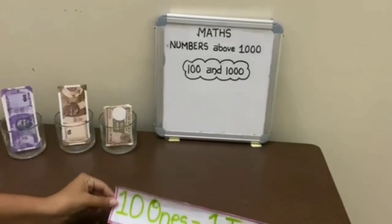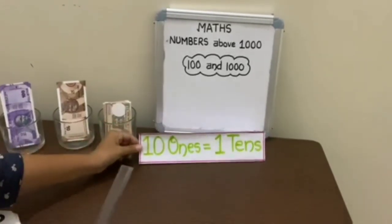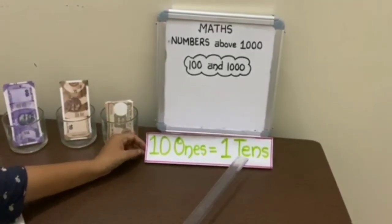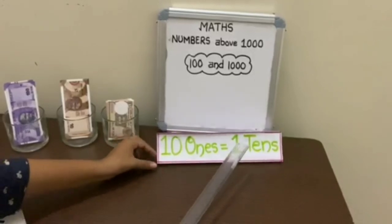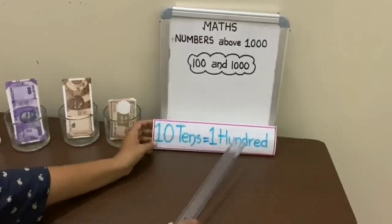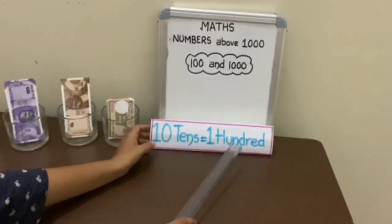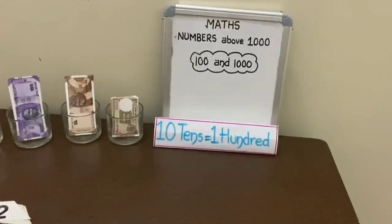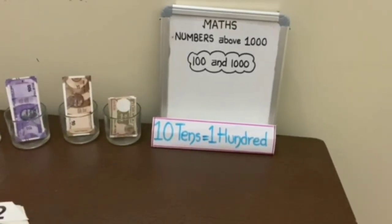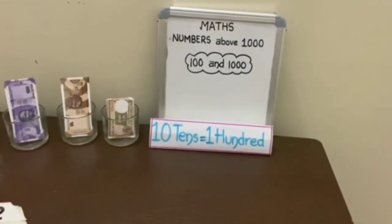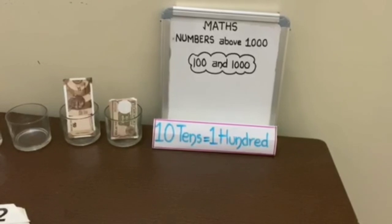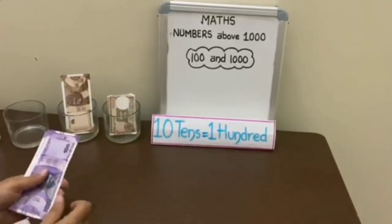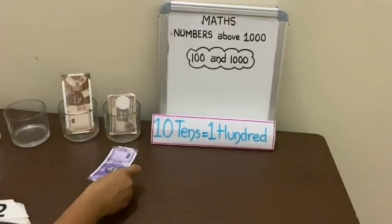You already have learned that 10 ones are equal to 1 ten, and 10 tens are equal to 100. So today let's count some 100 rupee notes and see what the relationship is between 100 and 1000. So here are the 100 rupee notes.